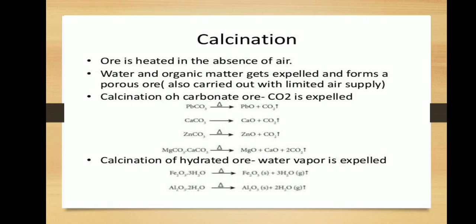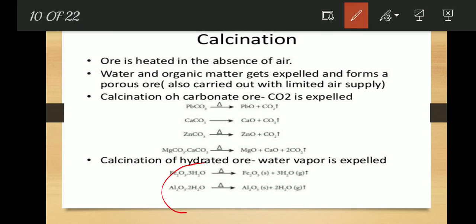In calcination, the ore is heated in the absence of air, and water and organic matter are expelled, forming a porous ore. For example, lead carbonate is strongly heated in the absence of air to form lead oxide with removal of carbon dioxide. Also, hydrated iron ore (Fe2O3·3H2O) is strongly heated in the absence of air to form iron oxide with removal of water vapour.